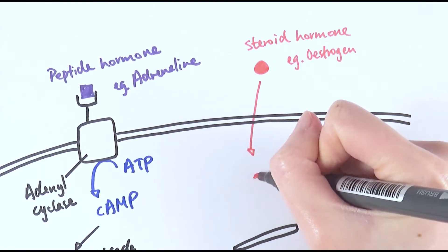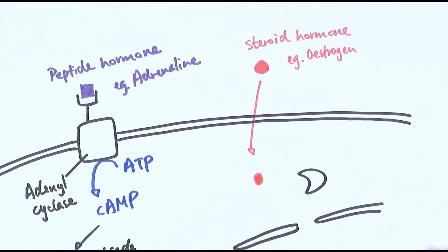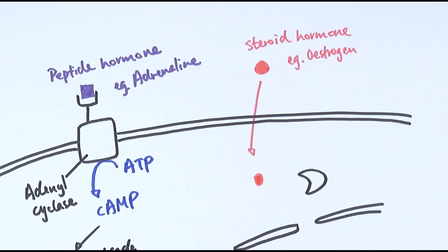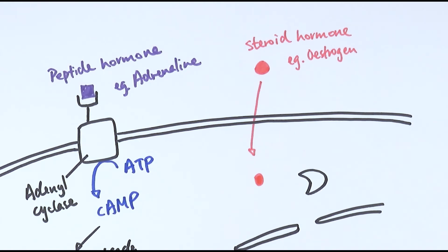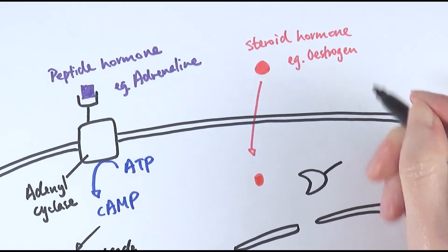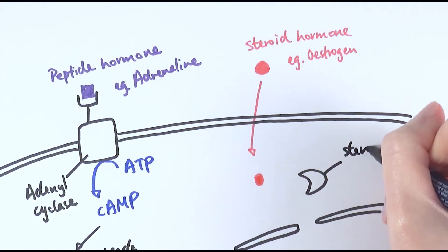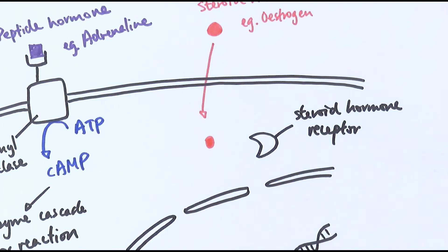They can just diffuse across like this and it enters the cell. In this case the receptor would actually exist inside the cell in the cytoplasm, so for example this one here. This is the steroid hormone receptor.